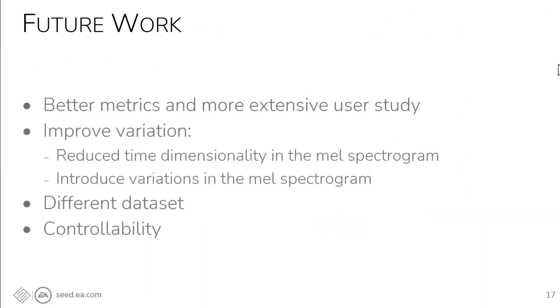So how can we improve on these results? As any generative task, having a benchmark and better metrics will help keeping track of the improvements in the field, but also performing more extensive user studies. In order to improve the variation, there's several approaches we can take, for example, reducing the dimensionality also on the time domain, since we only experimented with the frequency domain, but also introducing variations directly in the mel spectrogram or using some other representation that fits this task. We also want to validate our method on a completely different dataset. And finally, by collaborating closer to sound designers, we would guide the research in terms of controllability of the output.